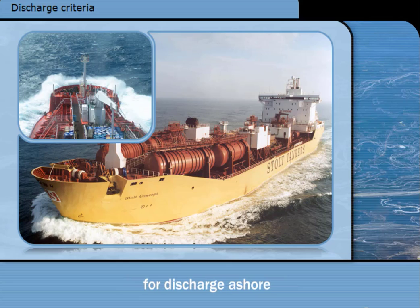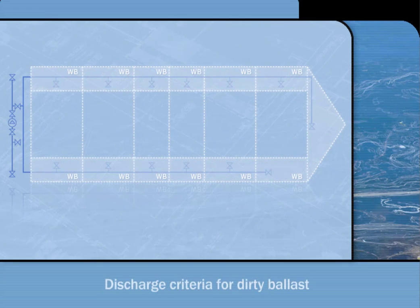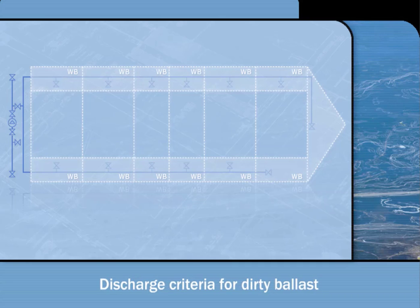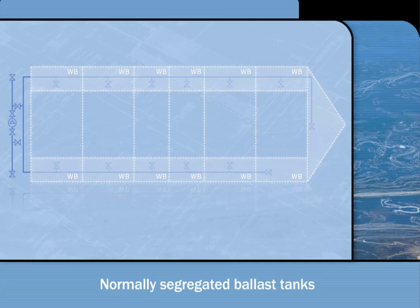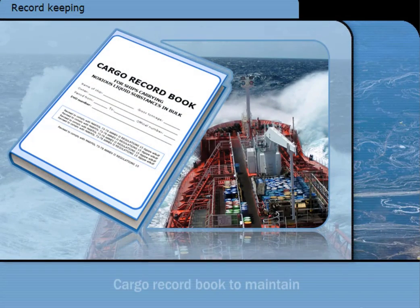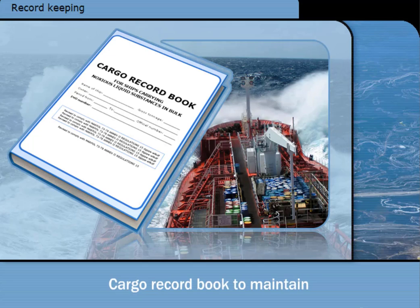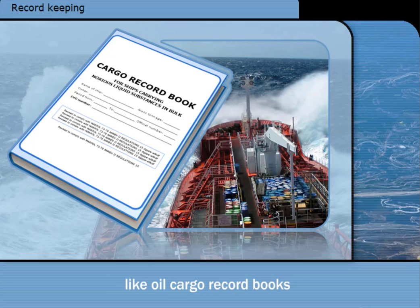Ports are required to provide reception facilities for noxious liquid substance slops. After a cargo tank has been discharged and pre-washed, if necessary, Annex 2 allows that it may be ballasted, although the ballast would be subject to the same discharge criteria as tank washings. Normally ballast will be loaded into segregated ballast tanks to prevent cargo contamination and avoid these restrictions. Ships carrying noxious liquid substances need to keep a cargo record book, which must be completed each time any of the cargo and ballast operations listed in the front of the book take place. Rules for completion and retention of record books are similar to those mentioned for Annex 1 oil tanker cargo record books.